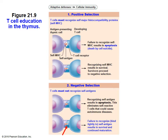If T cells become immunocompetent in the thymus, how are they trained to recognize a foreign antigen versus a self-antigen? The thymus has a blood barrier that shields immature T cells from other cells, giving them time to be trained. Within that sequestered region, T cells must go through two main processes: a positive selection and then a negative selection.